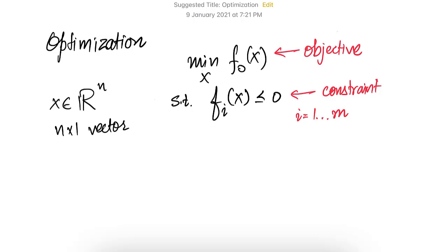The constraints could also be equality constraints. So in addition to inequality constraints of the form fi less than or equal to 0, the constraints could also be of the form fi equal to 0 for some i — these are equality constraints.